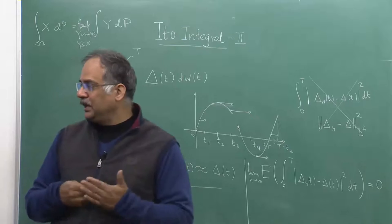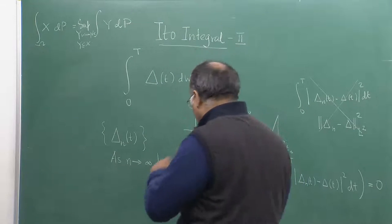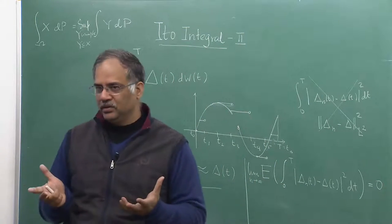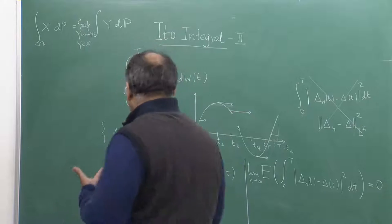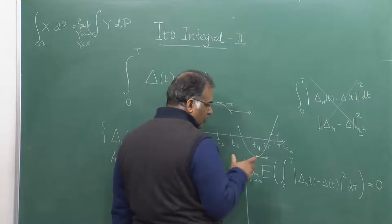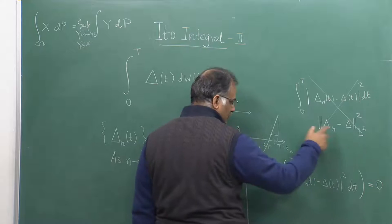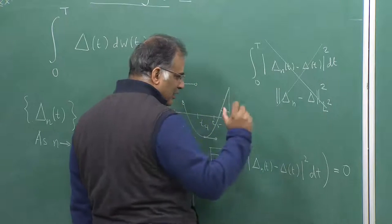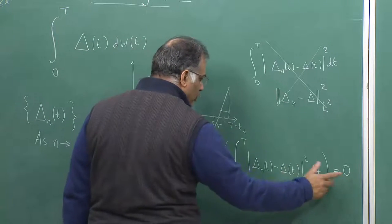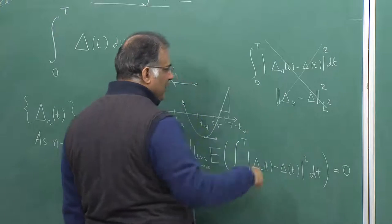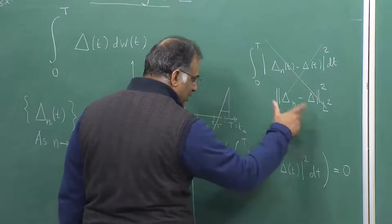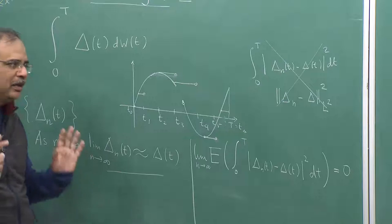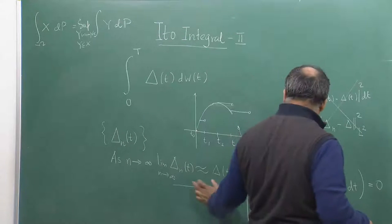The distance itself is a random variable, so the expected distance between these two has to go to 0 — that is the idea. Shreve tells us that when n grows, the simple processes must somehow manage to imitate, or be almost the same as, the given process. By this statement, we actually mean that as n tends to infinity the expected squared distance goes to 0.